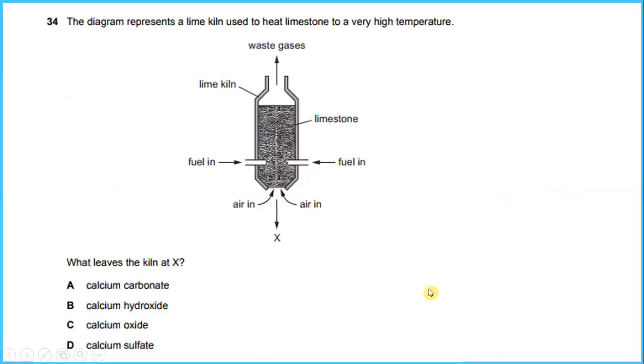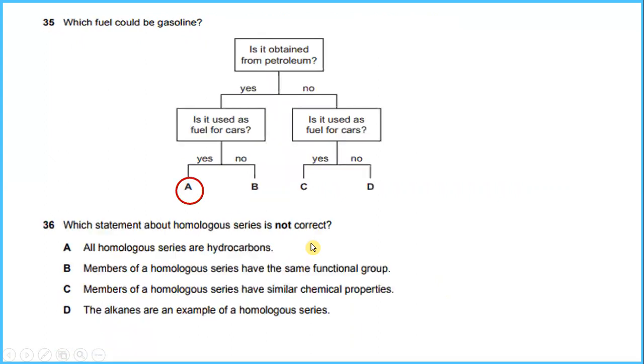The diagram represents a lime kiln to heat limestone to a very high temperature. What leaves the kiln at X? That is calcium oxide. Which fuel could be gasoline? So it is obtained from petroleum - yes. It is used as a fuel for cars - yes. The answer will be A. Which statement about homologous series is not correct? The answer will be A.